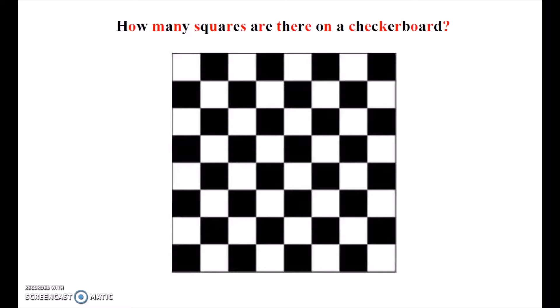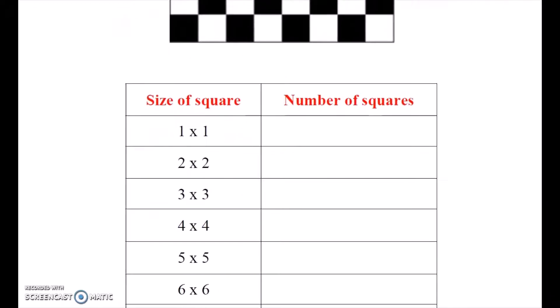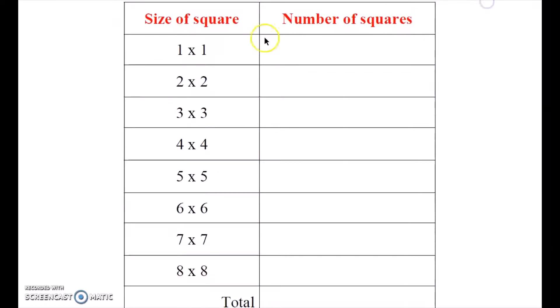In situations like this, one strategy you can use is to make an organized list. For this problem, I suggest making a table something like the one below. In this table, I've listed the size of the square and then how many squares of that size there are on a checkerboard.